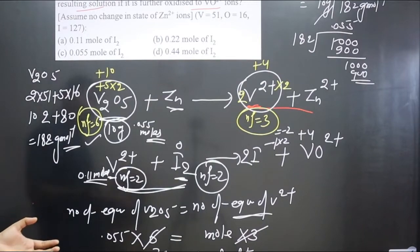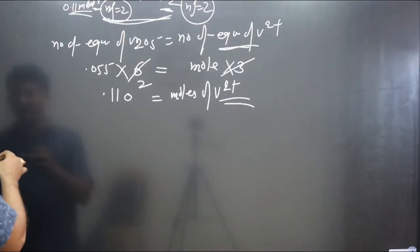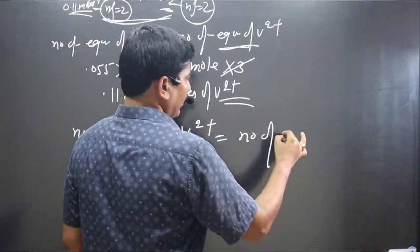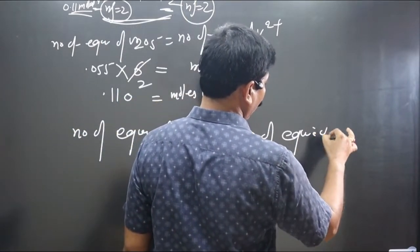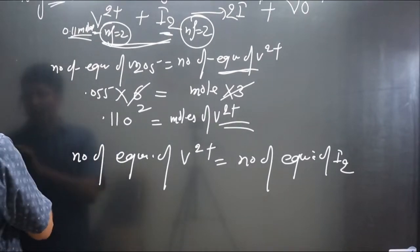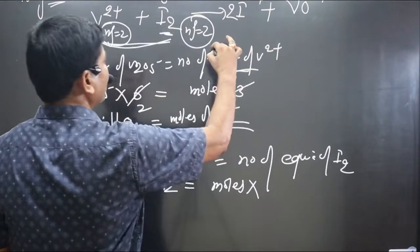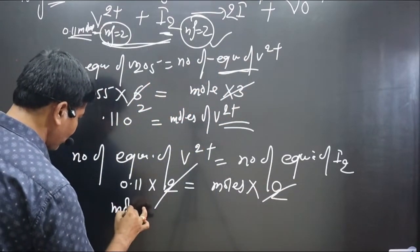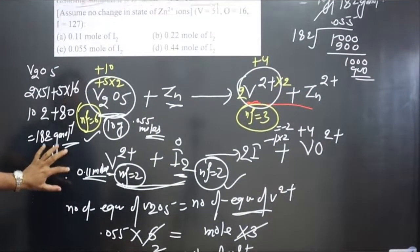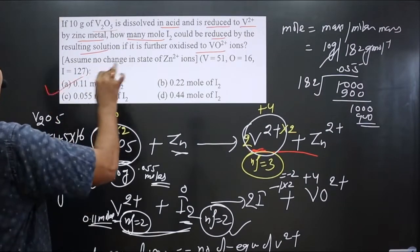With N-factor for I2 equal to 2, we equate equivalences of V²⁺ and I2: 0.11 × 2 = moles of I2 × 2. The 2s cancel, giving moles of I2 = 0.11 moles. So 0.11 moles of I2 will be reduced by V²⁺. Option A is correct.